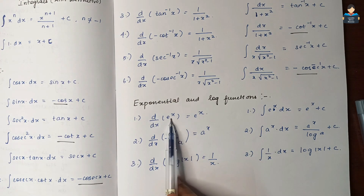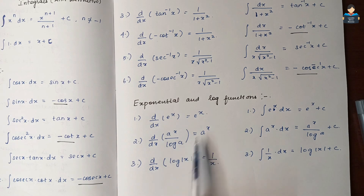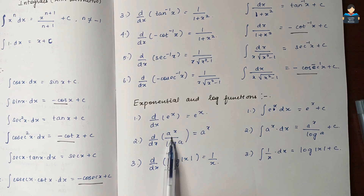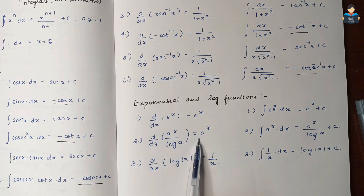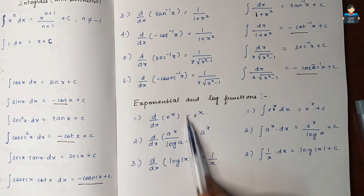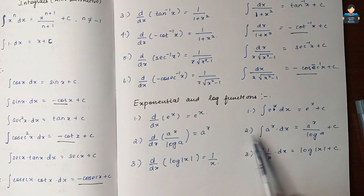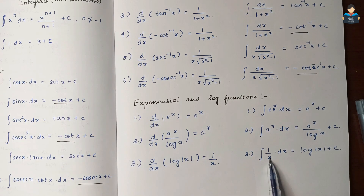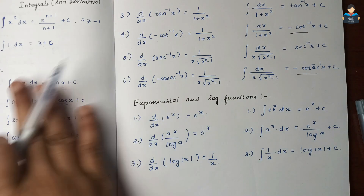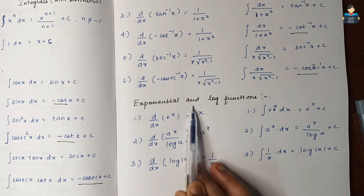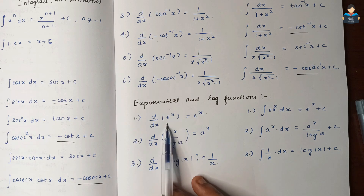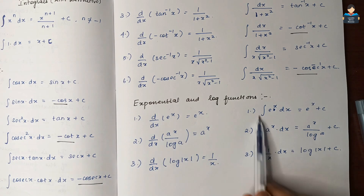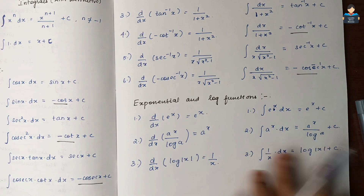For exponential and logarithmic functions: the differentiation of eˣ is eˣ, and log x differentiates to 1/x. So the integral of eˣ is eˣ plus C, the integral of aˣ is aˣ divided by log a plus C, and the integral of 1/x dx equals log|x| plus C. That is the anti-derivative. This completes the introduction of Exercise 7.1.